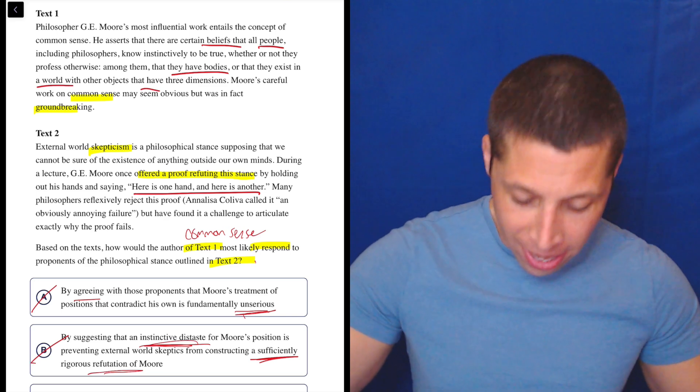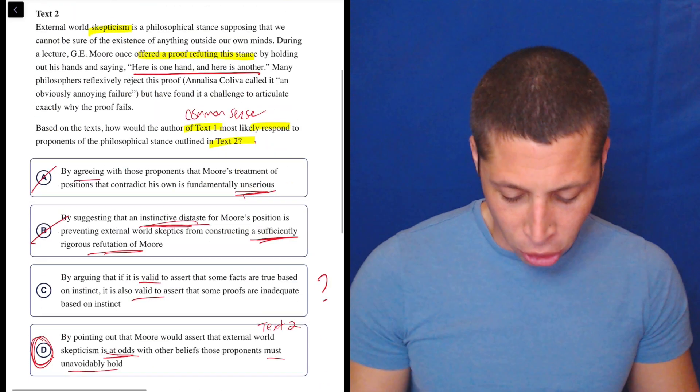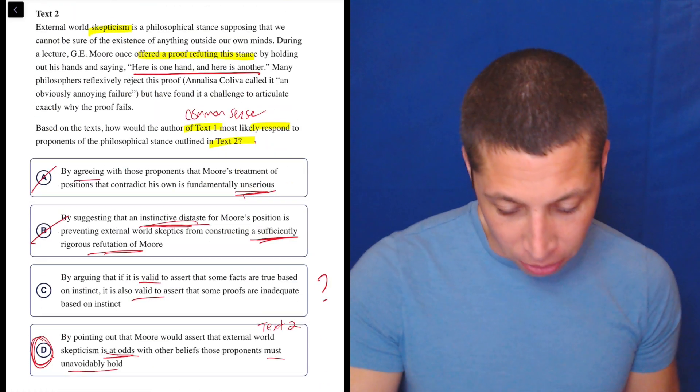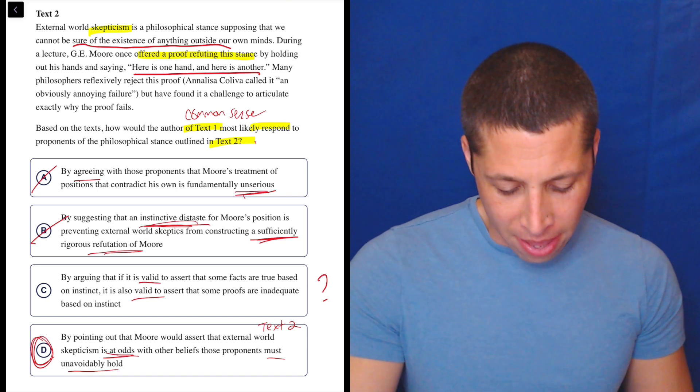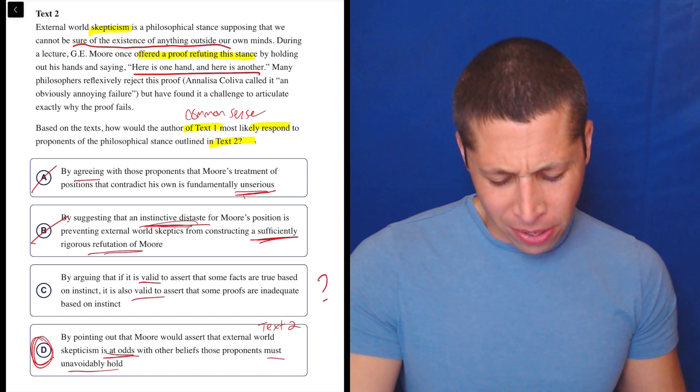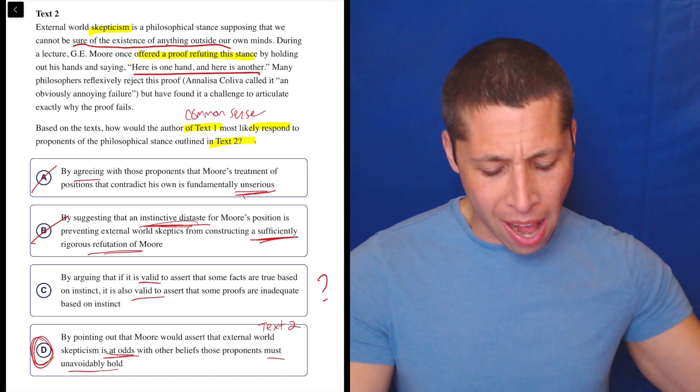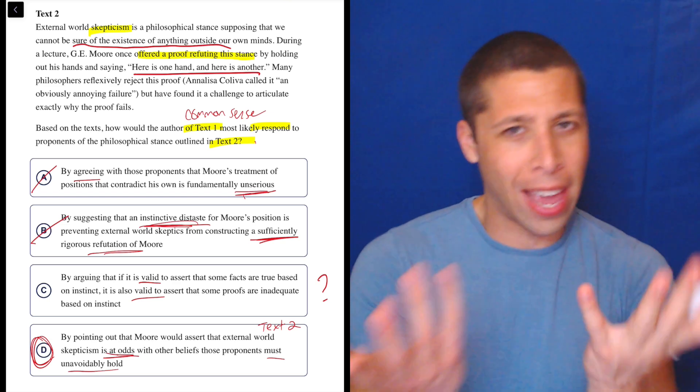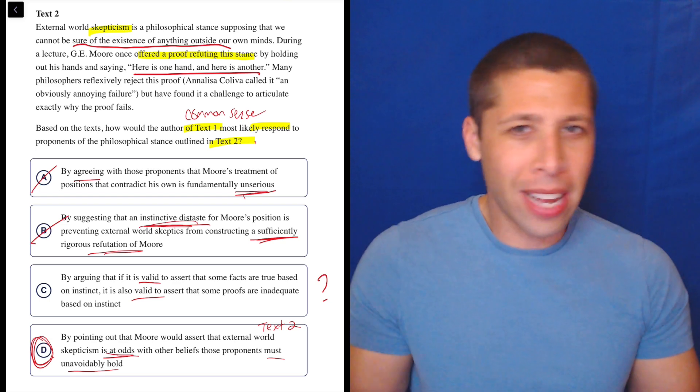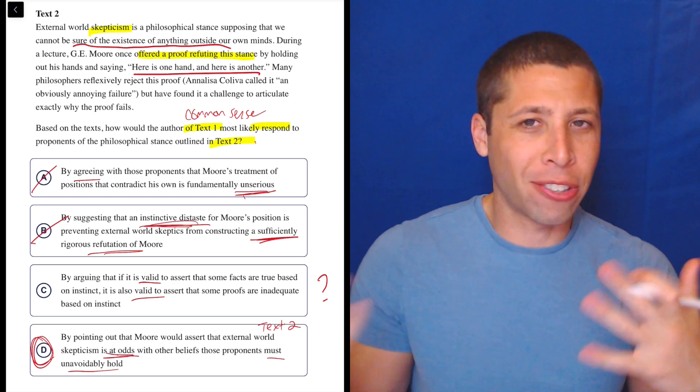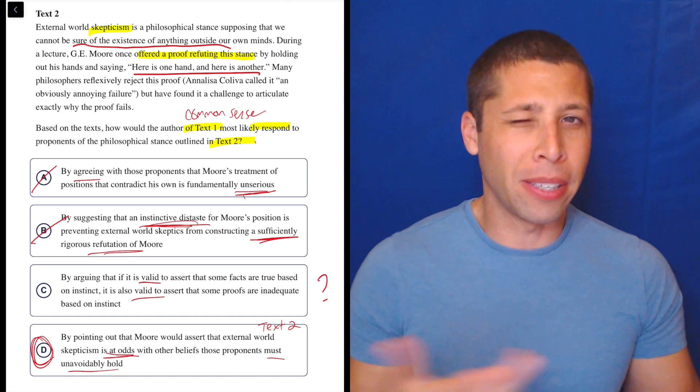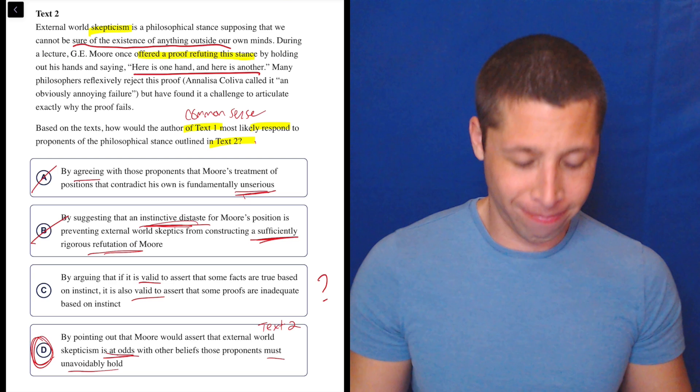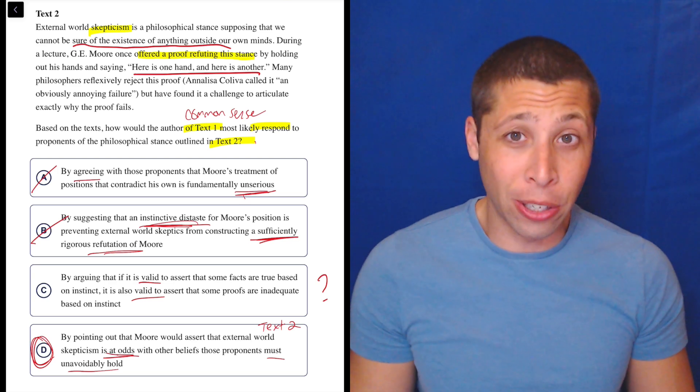So in order to be skeptical, because we're not sure about the existence of anything outside our own minds, then that belief of skepticism is at odds with the belief that you have hands. Which makes sense, because if you don't actually have hands, because the real world doesn't exist, then you can't believe that you have hands, I guess. That sounds good.